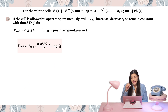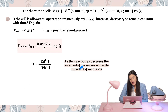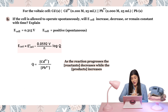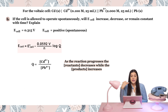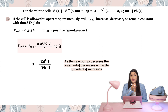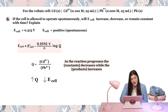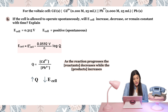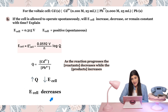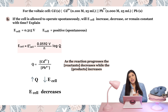Think about this in terms of the reaction quotient Q. As the reaction progresses, the concentration of reactants decreases because they're being consumed, and the concentration of products increases because reactants are turning into products. This increases the value of Q, which then decreases E of the cell. So E cell is going to decrease. When Q increases, E cell decreases; when Q decreases, E cell increases.